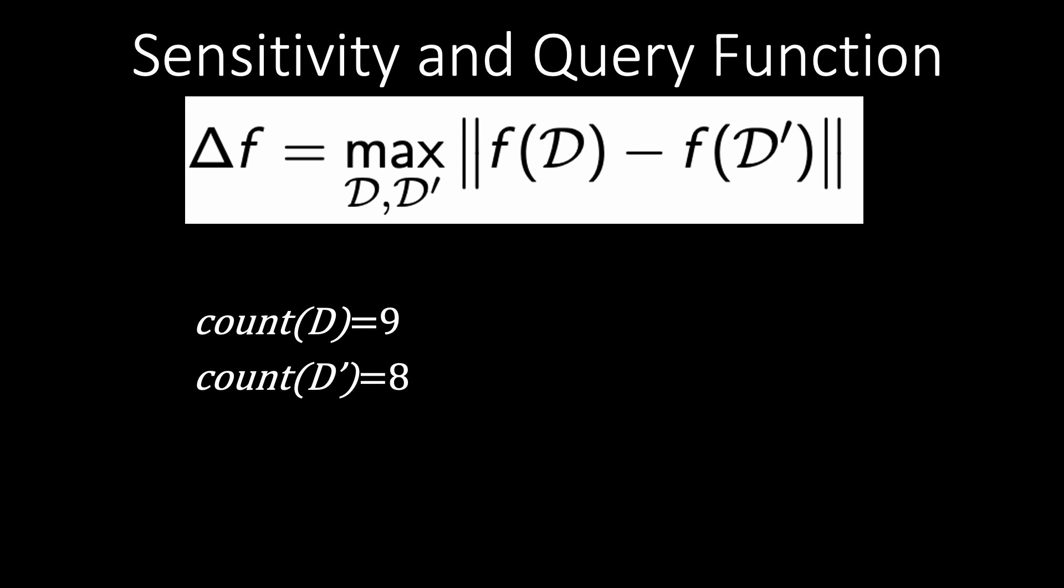It could be Eve, Alice, Bob, it doesn't really matter and the difference will always be one because counting items doesn't really depend on who you count.